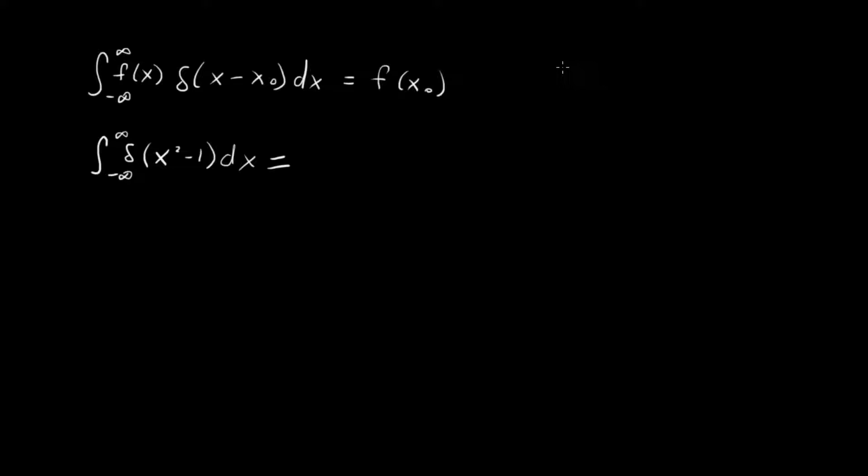I'm not going to derive this, but I'll write down the property we want to use to solve this integral: δ(g(x)) = Σᵢ [δ(x - xᵢ) / |g'(xᵢ)|], where we sum over all zeros of the function - all values of x for which g(x) = 0. I'll circle this because this is one of the most important delta function properties.